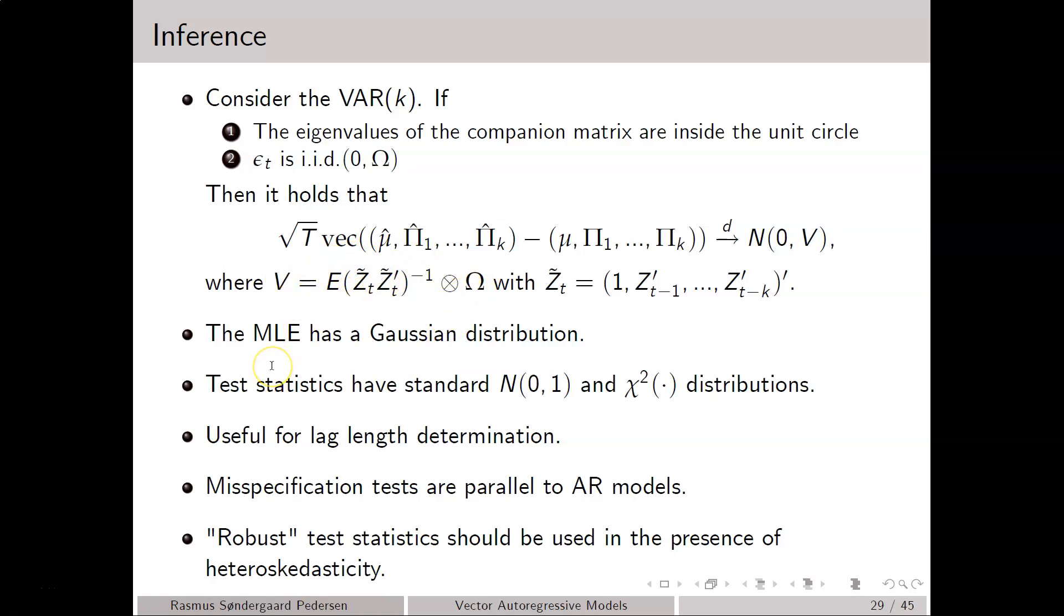Note that the usual test statistics such as the t-statistic and the likelihood ratio test statistics and the Wald statistics and Lagrange multiplier all have the standard distributions, either standard normal or chi-squared under these assumptions here. So it means that we can, for instance, use this result in order to determine the number of lags in our model. So we could estimate a VAR(2) and test whether we can leave out all the second-order terms.